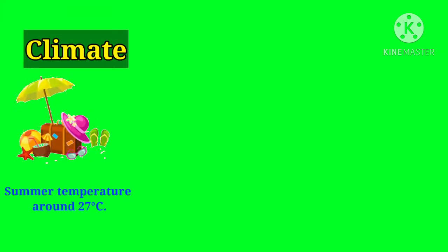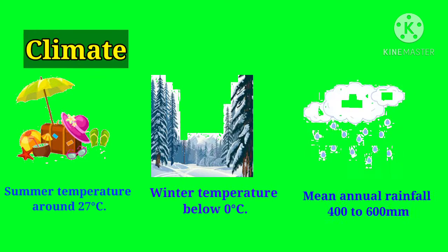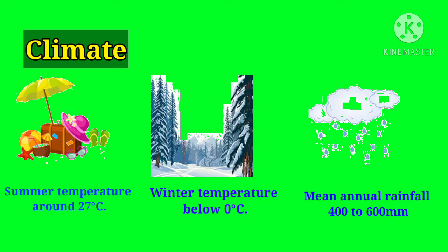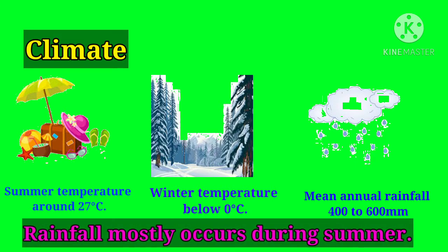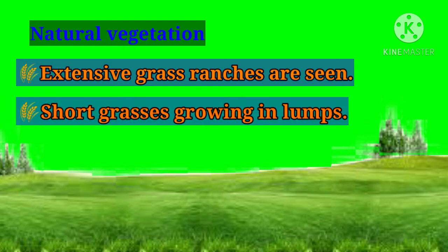Climate: Summer temperature is around 27 degrees Celsius, and winter temperature is below zero degrees Celsius. Mean annual rainfall is 400 to 600 mm, and rainfall mostly occurs during summers.